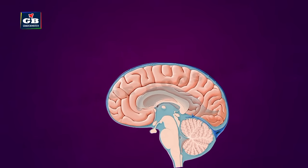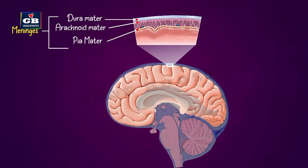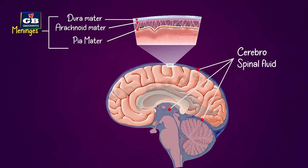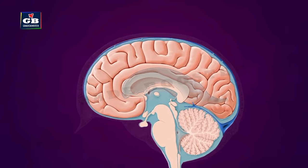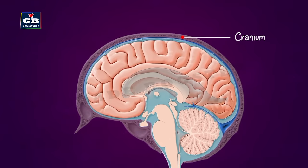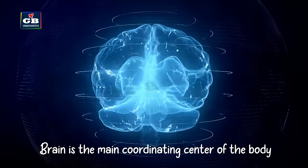The brain is covered by a fluid-filled balloon-like structure made up of three layers called meninges. The fluid present between these layers is called cerebrospinal fluid. These layers and fluid protect the brain from shocks and injuries. The brain along with the meninges is further protected by an outer bony case called the cranium, which is a hard structure made up of bone.